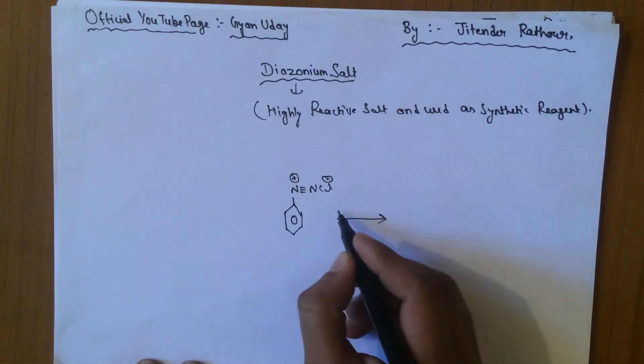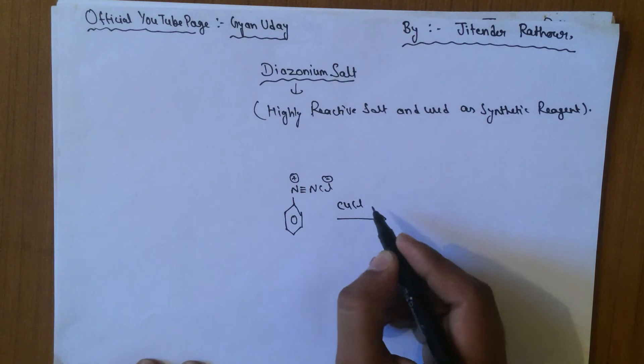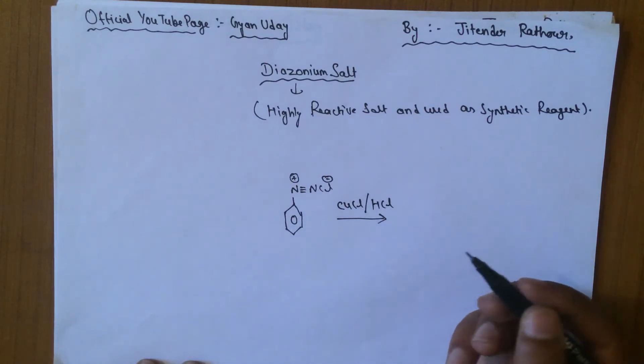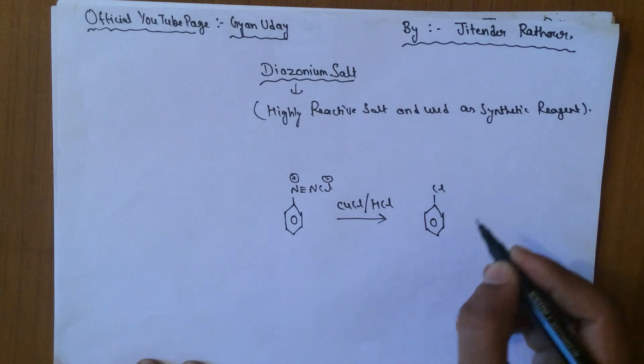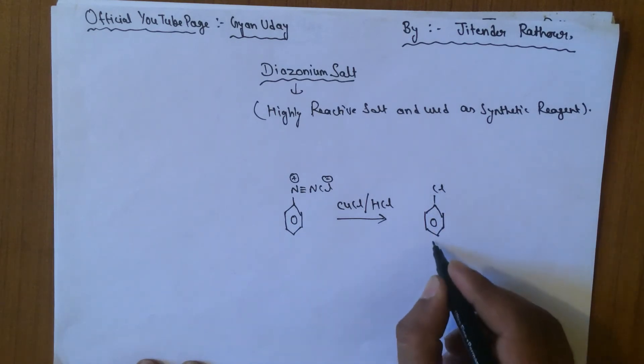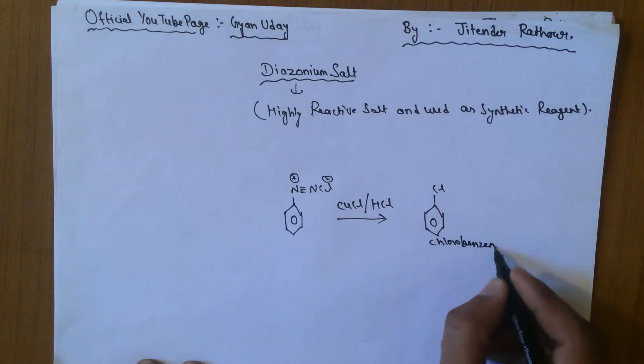The first reaction of diazonium salt is CuCl or we can use HCl, and the product is chlorobenzene, known as chlorobenzene.